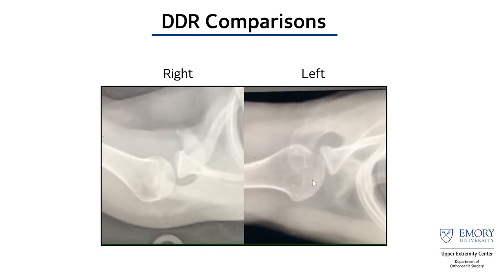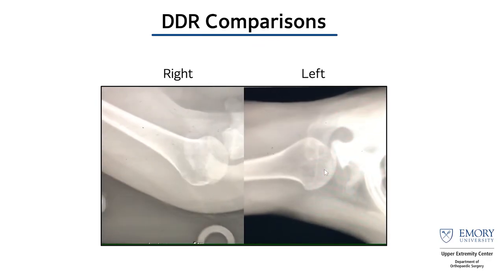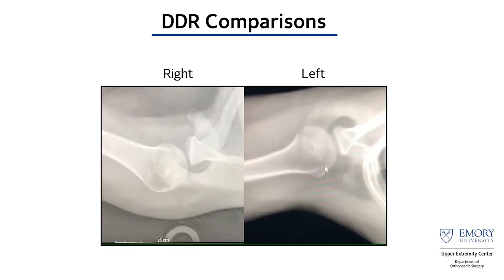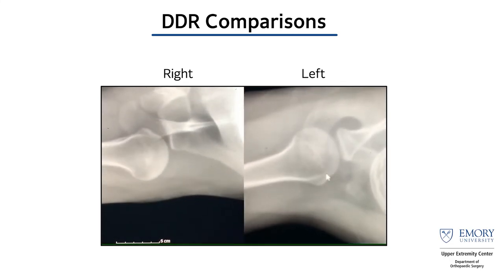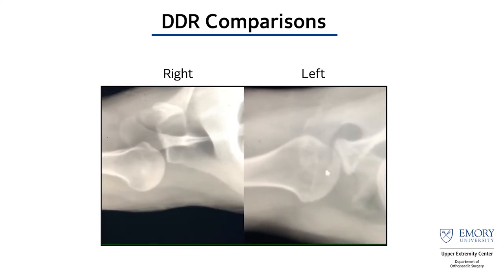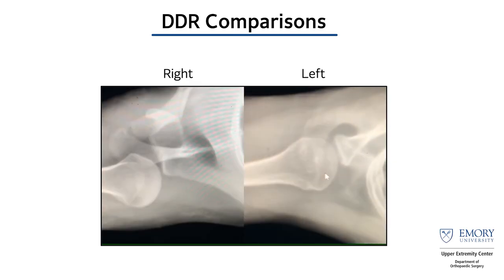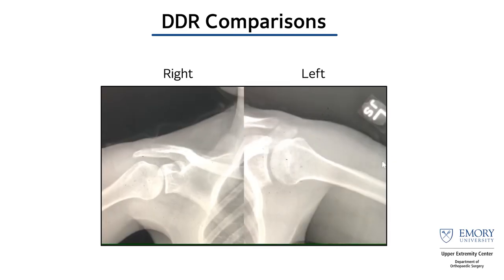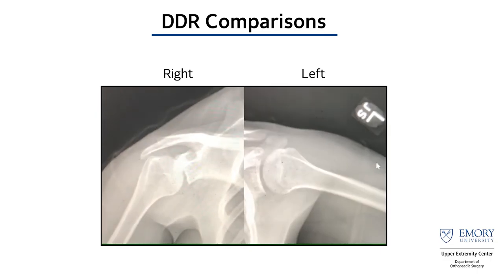The useful thing was we got the DDR on the left — the side we operated on with the latissimus transfer — and you can see how we were able to recenter her humeral head. On the right, you can see how she is posteriorly decentered and posteriorly subluxed, and she's not able to move her shoulder because she's not actually in the glenohumeral joint.